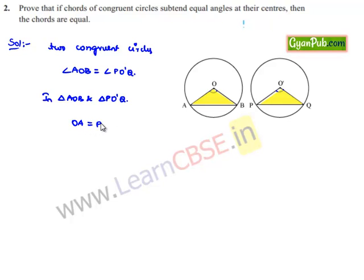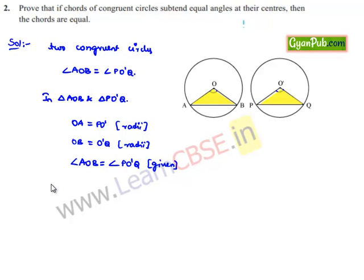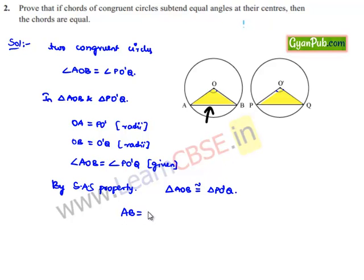OA equals O'P since both circles are congruent, so their radii are equal; OB equals O'Q, also radii of the circles; and angle AOB equals angle PO'Q as given. By the SAS property of congruency, triangle AOB is congruent to triangle PO'Q. Therefore, when two triangles are congruent, their corresponding sides and angles can be equated. Hence, AB equals PQ. Thus, chords which subtend equal angles at the center are of equal length — proved.